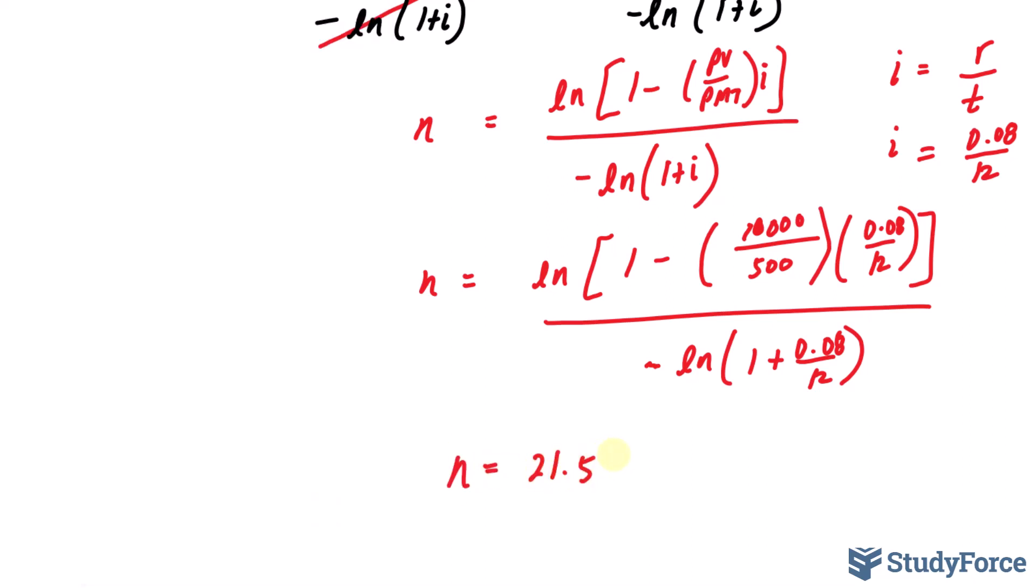21.5365 periods. Remember that for this example, our periods are monthly. So this number is technically telling us that we need to make just over 21.5365 monthly payments.